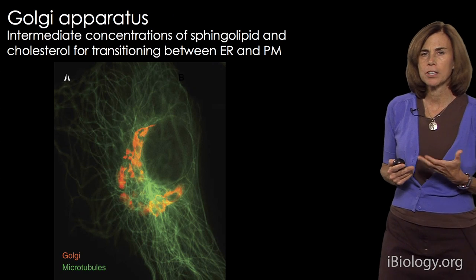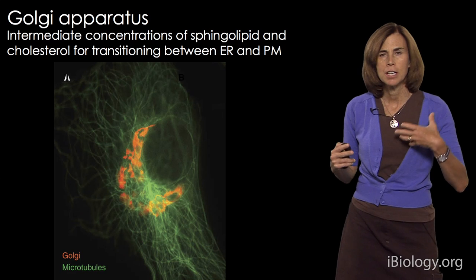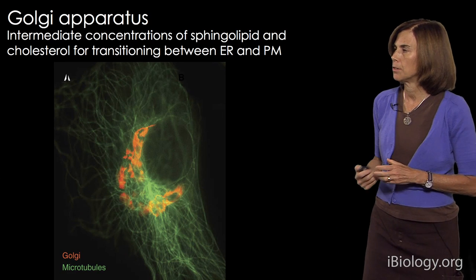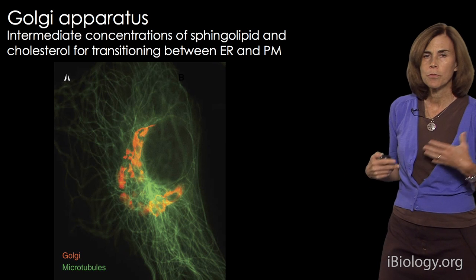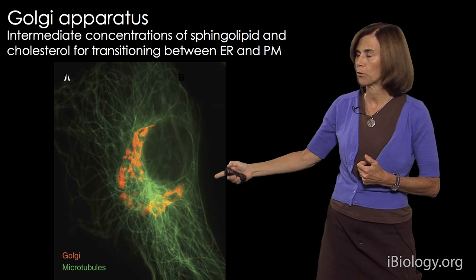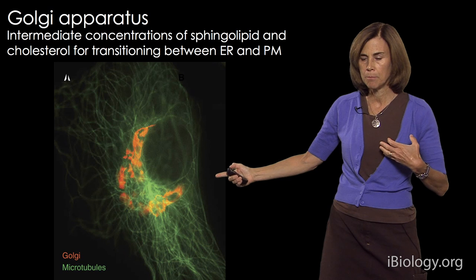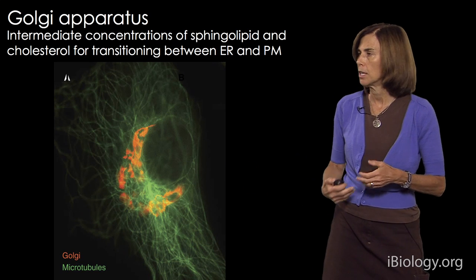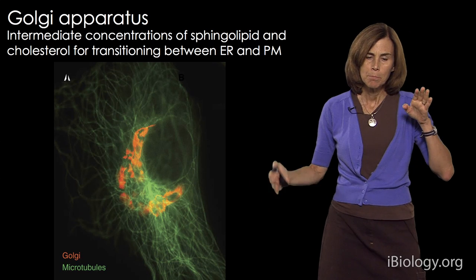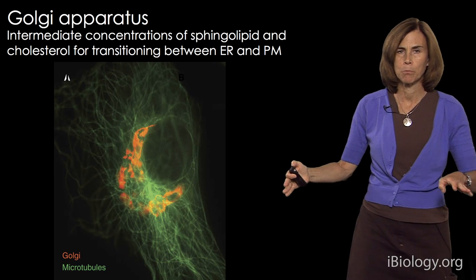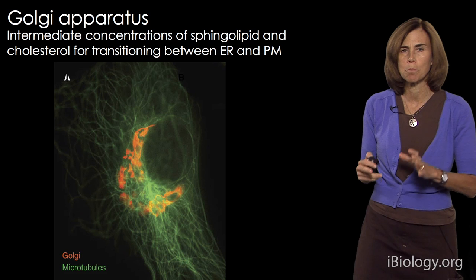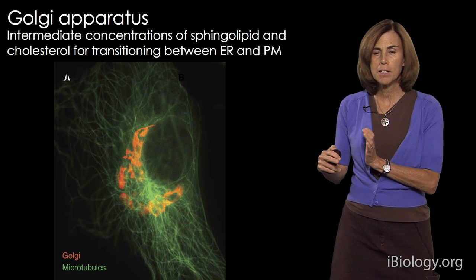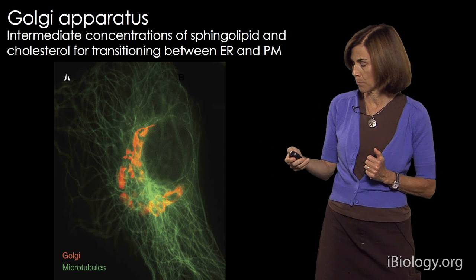The Golgi apparatus is intermediate in concentration between these different phospholipids and cholesterol. Its function within the secretory pathway could potentially be optimized by that mixed composition, since it is situated between the ER and the plasma membrane and is where sorting decisions are made as to whether proteins leave the ER-Golgi system or move on to the plasma membrane.